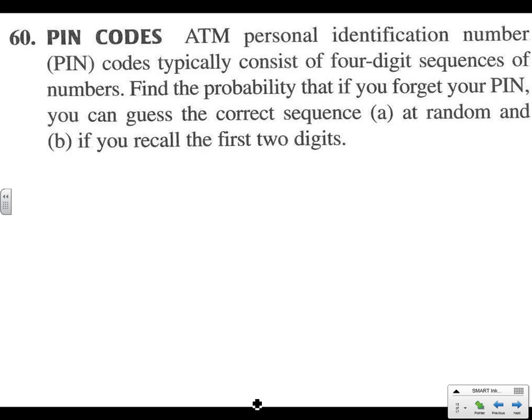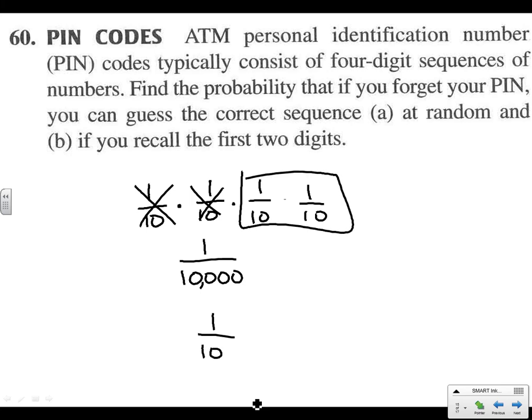Alright, problem 60. ATM personal identification number, PIN codes, typically consist of four-digit sequences. Find the probability that if you forget your PIN, you can guess the correct sequence at random, or if you recall the first two digits. So what's your chance of guessing the first number? You've got a one out of ten chance. Second number, one out of ten chance. Third number, one out of ten chance. Fourth number, one out of ten chance. So if you don't remember your PIN number, you have a one out of ten thousand chance of guessing that right. And if you know the first two, then you only have to guess the last two, which is going to be a one out of one hundred chance. So your odds get a whole lot better if you can remember the first two.